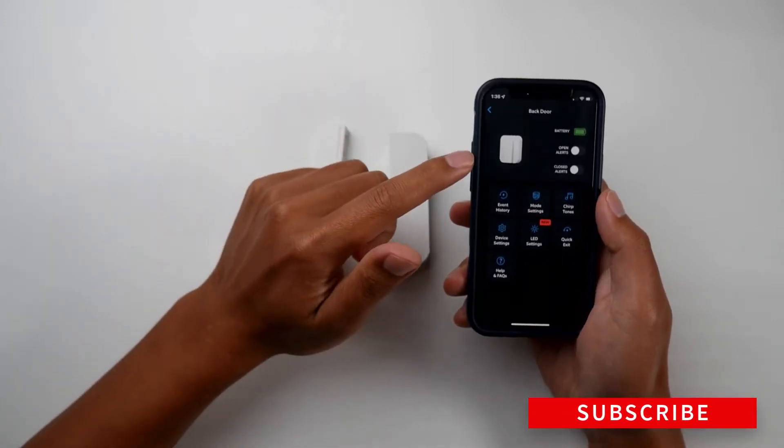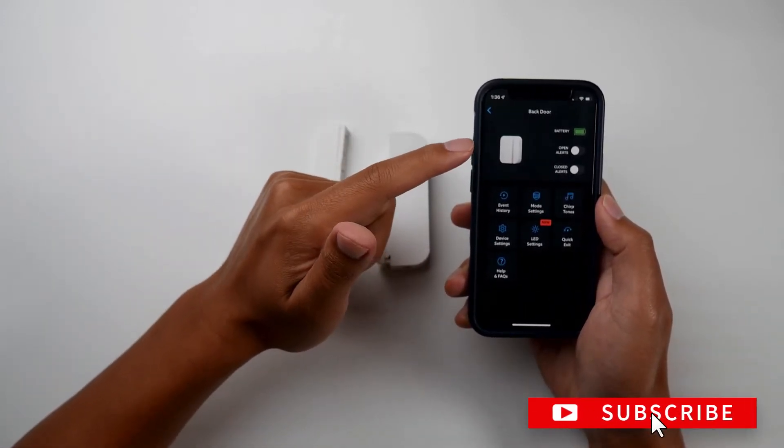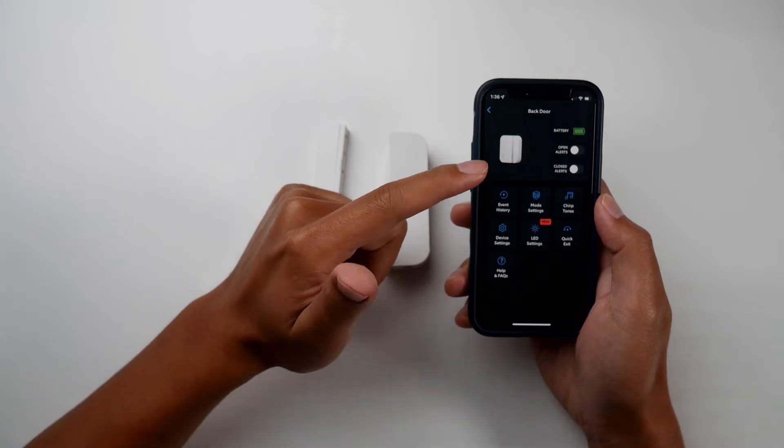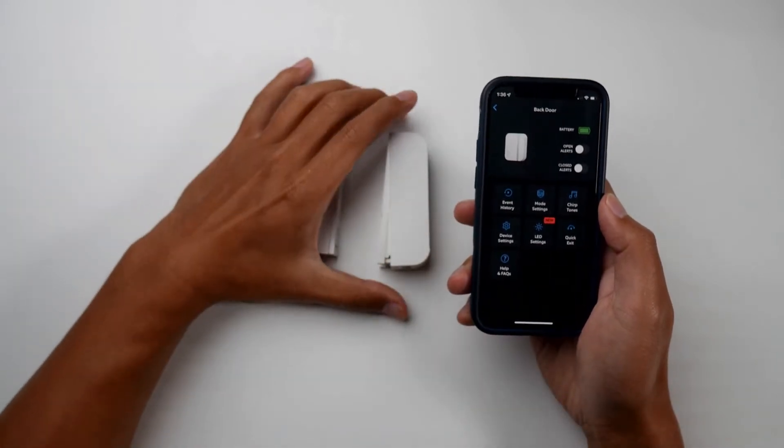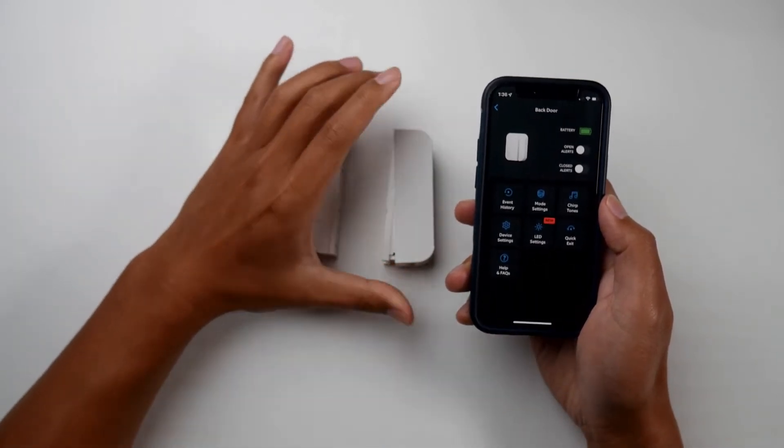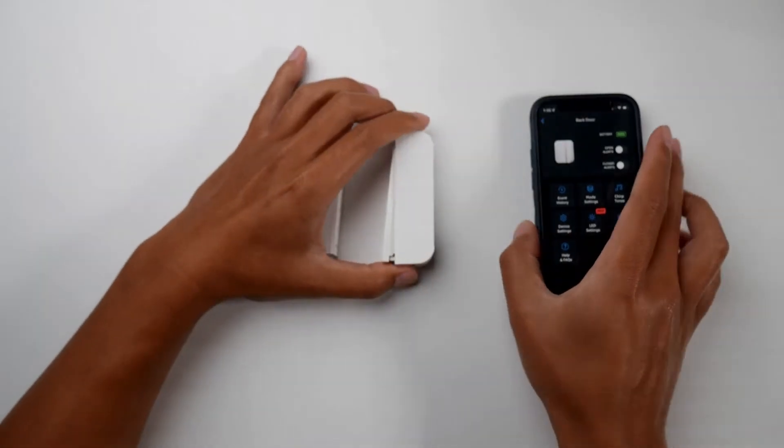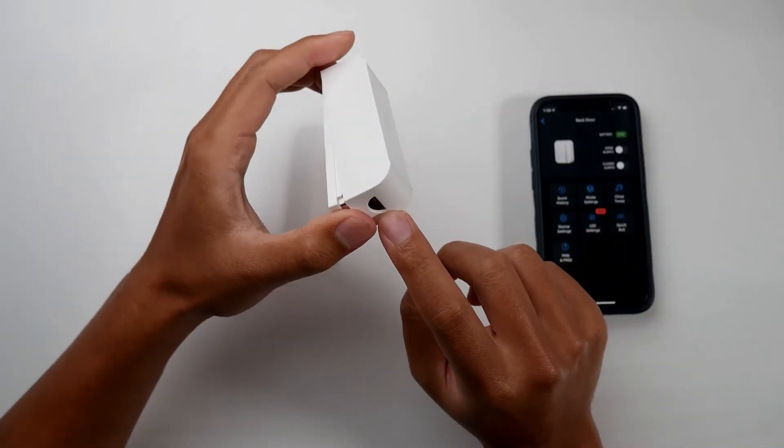If you have the slimmer version similar to what's on this screen, you may have the second generation. I have the second generation one, but I just have a first generation model with me here. The first thing you'll do is locate this button on the bottom of your sensor.